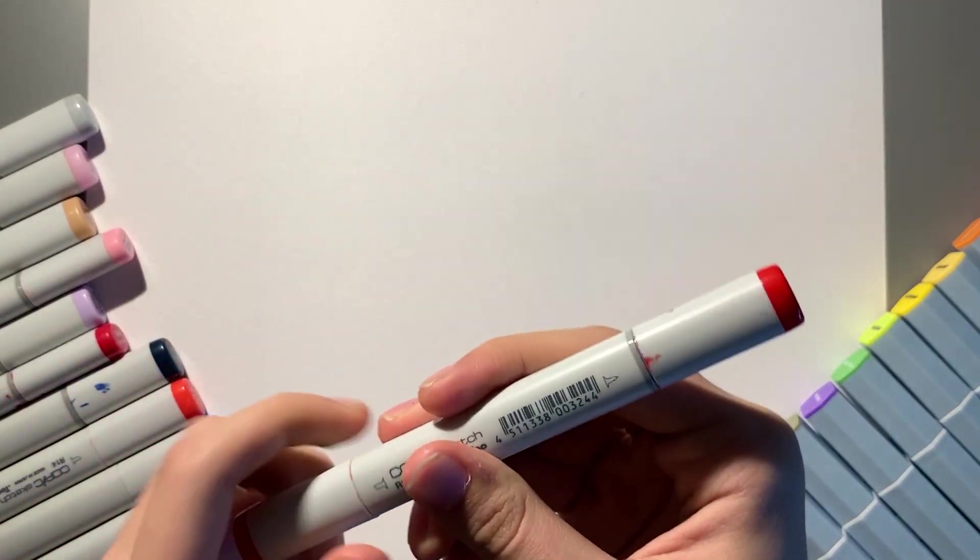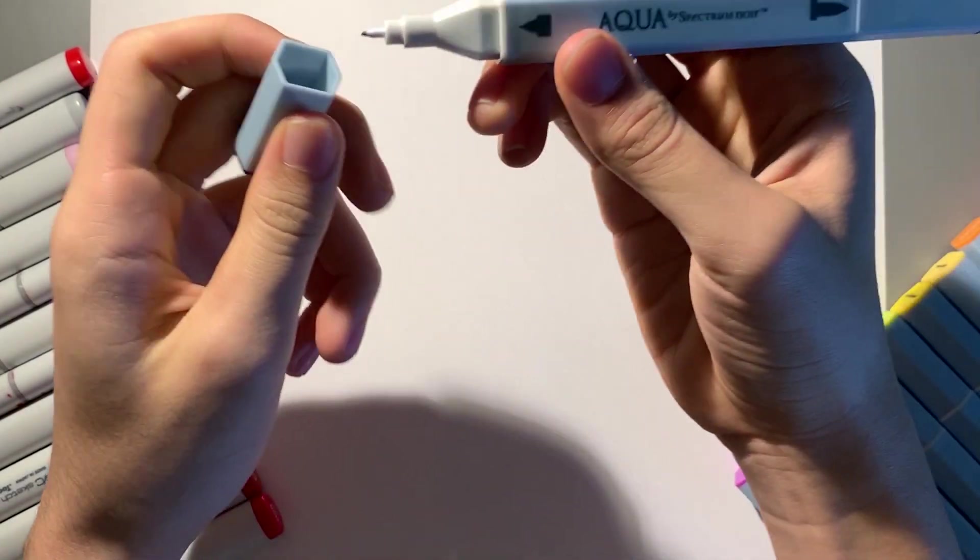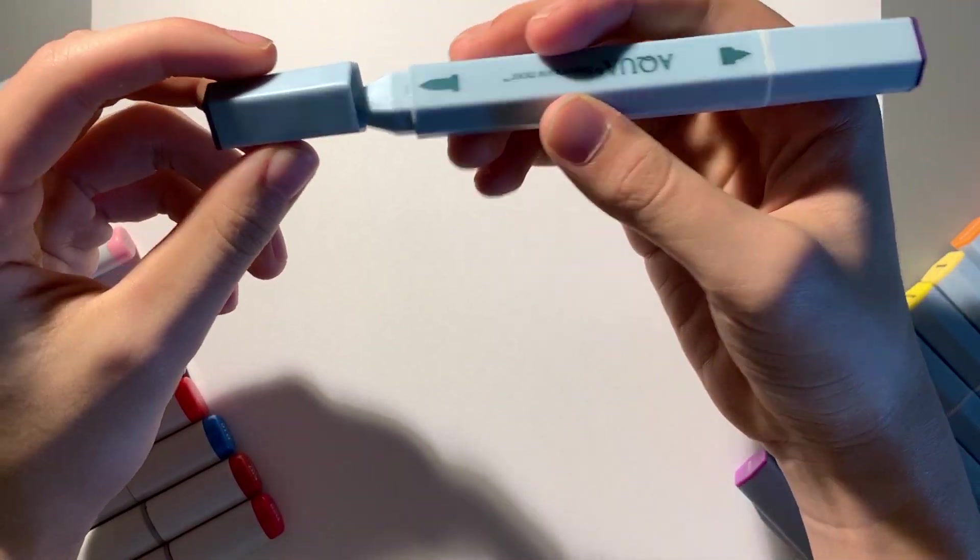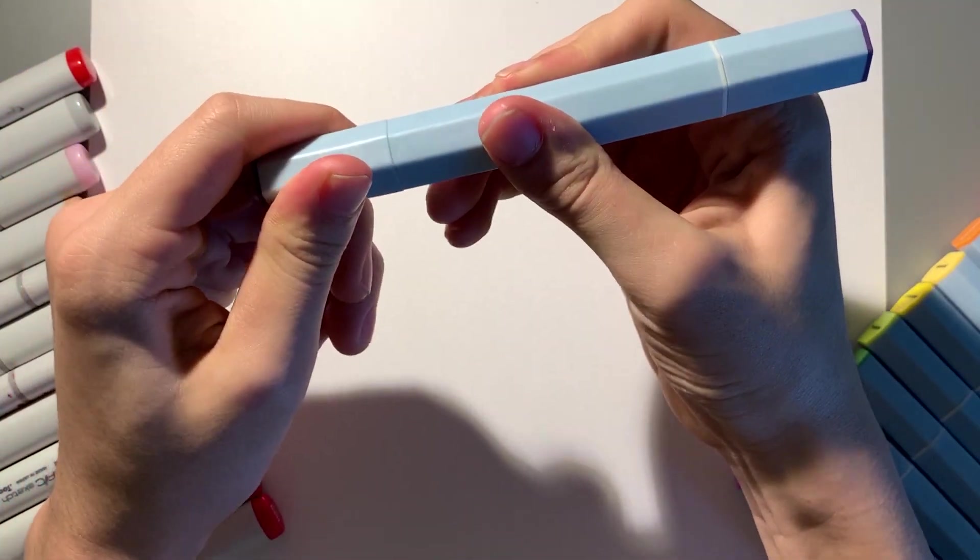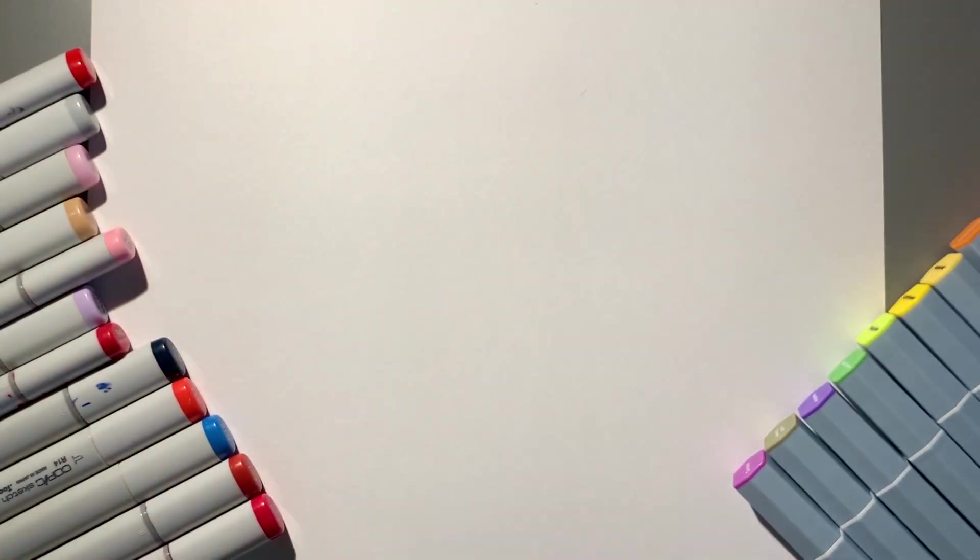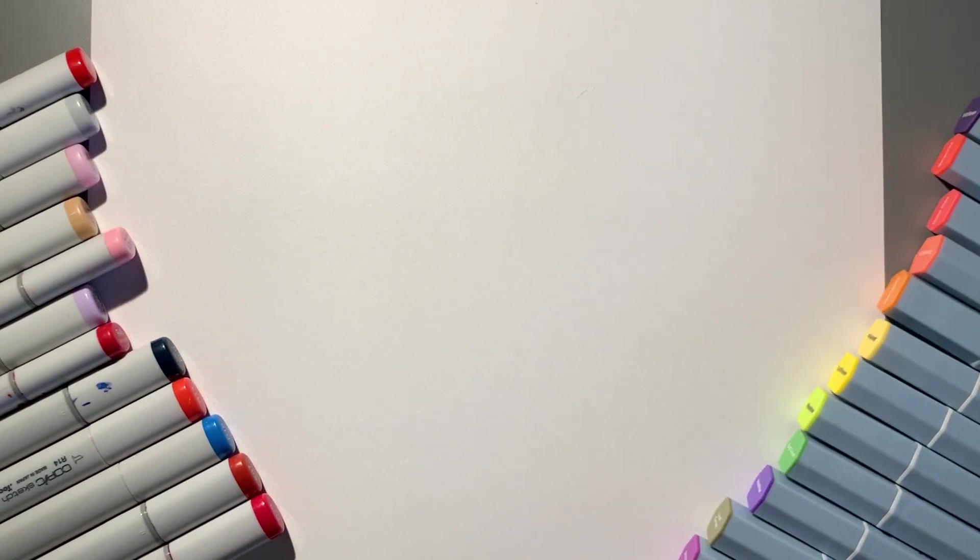I'm curious to find out what's actually in the Spectrum Noir. It looks like this side is a fine tip and this side is a brush. I'll be interested to find out the differences between Copic brushes and the Spectrum Noir brushes and see which one has better quality. I'm gonna vouch for Copic right now because that's what I've been using for the past two years, but we'll see what happens.